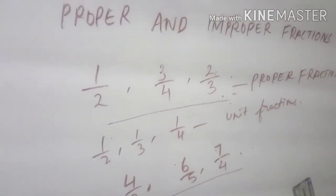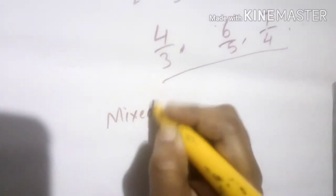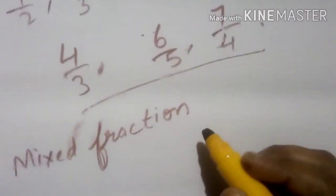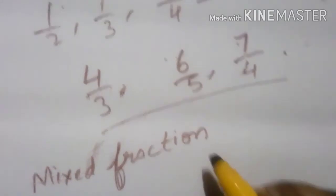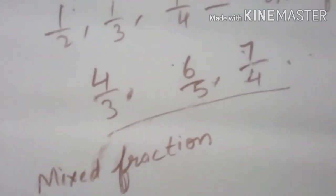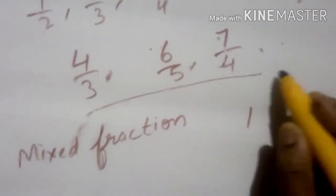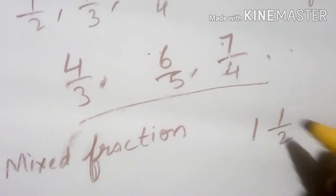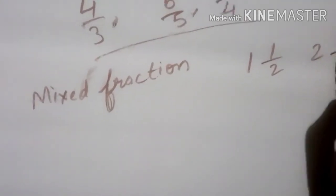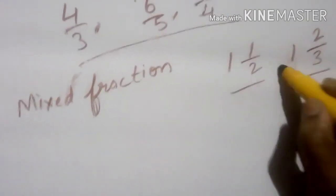Next is mixed fractions. What is a mixed fraction? A mixed fraction consists of a whole number and a proper fraction — like 1 and 1 by 2, or 1 and 2 by 3. These are mixed fractions.